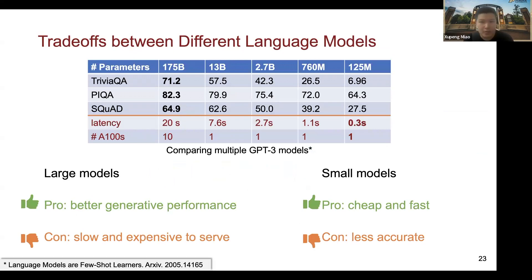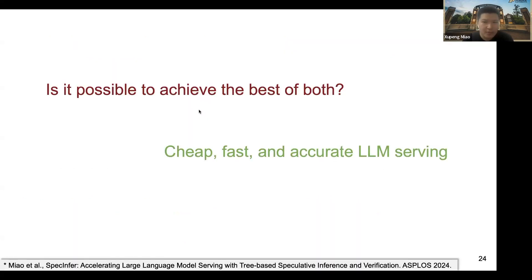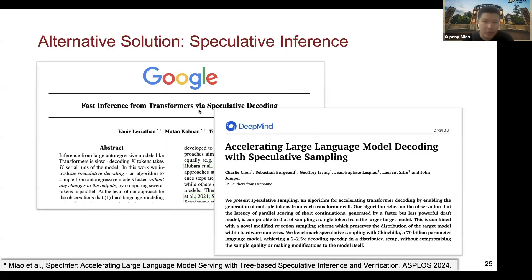Another important observation is that existing public language models are usually released with several variants at different scales. For example, the smallest GPT-3 model has only 125 million parameters — it shows lower model performance but can be hundreds of times faster than the largest 175-billion model. Considering these trade-offs, we ask: is it possible to achieve the best of both small and large models? We want to build a cheap, fast, and accurate LLM serving system. A promising alternative is called speculative inference, or speculative decoding, first proposed by Google and DeepMind independently.